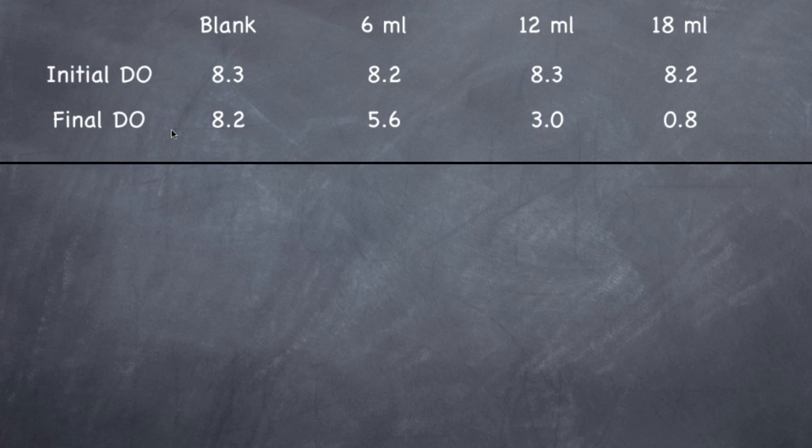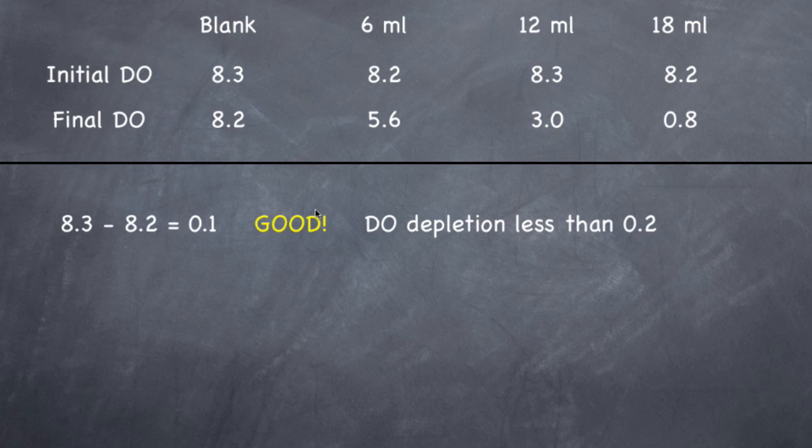So let's do those steps. Step 1 is find the DO depletion of your blank. So 8.3 minus 8.2 equals 0.1. So of your blank, the DO depleted by 0.1. Is that good? Yes. DO depletion was less than 0.2. So the sample was okay. If it had been 0.3, the whole entire test is bad. You can't even do it anymore.